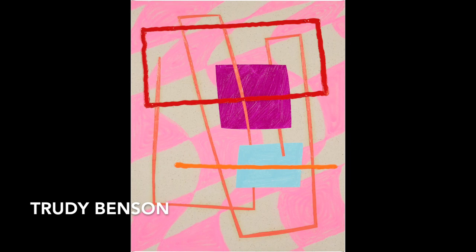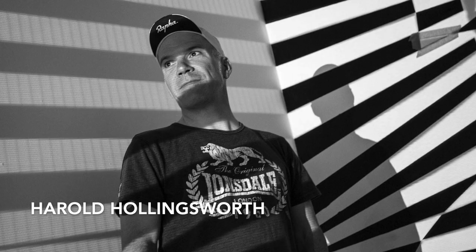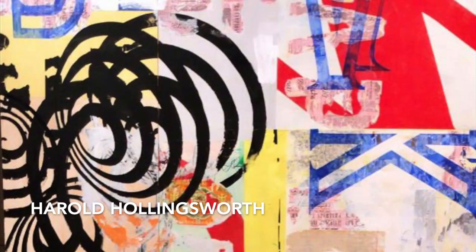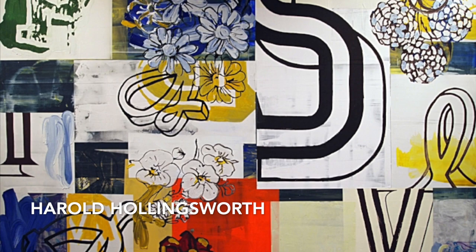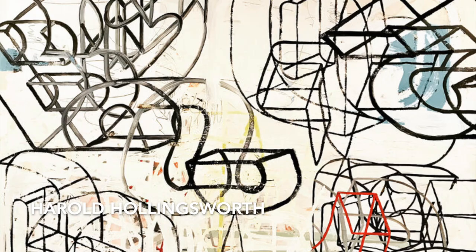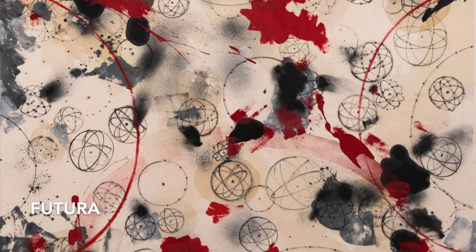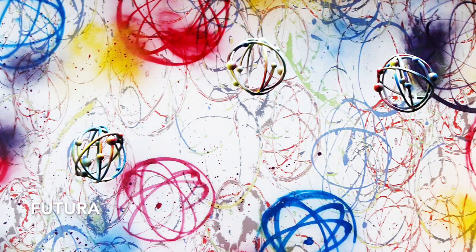Trudy Benson is another contemporary American painter that utilizes large swaths of paint with overlapping lines, frames, and shapes. Contemporary American artist Harold Hollingsworth does an excellent job at using surface design and textures, but focuses more on overlapping elements that include shape, line, pattern, and text.